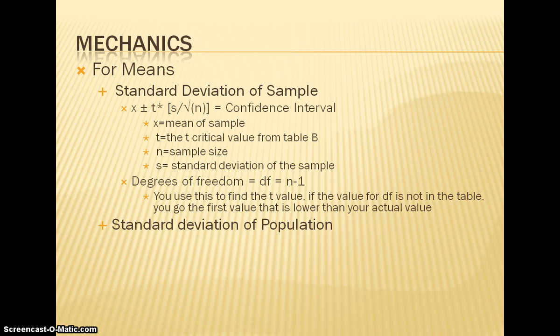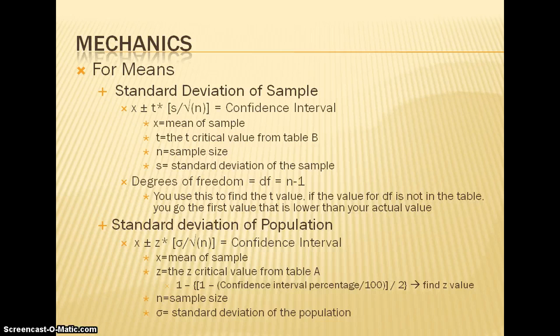When your standard deviation of the population is given, the formula is x plus or minus z times sigma over square root of n. x, in this case, is the mean of the sample. z is the z-critical value from table A.